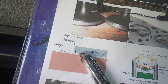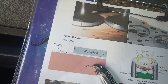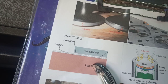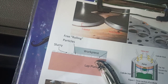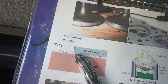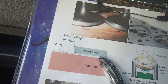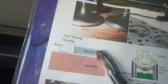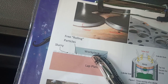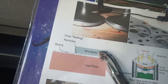Due to the abrasive particles between the valve and valve seat, micro grinding takes place between the two work pieces. Due to this micro grinding, all the irregularities present on the valve and valve seat are cleared down.